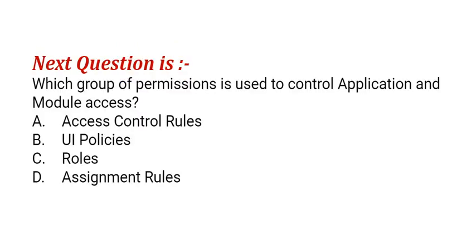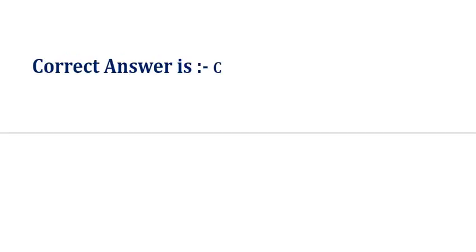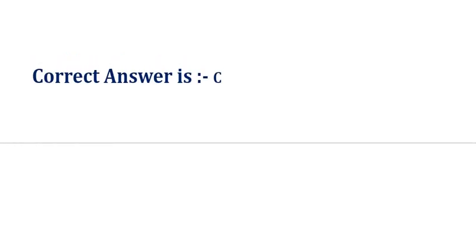Our next question is: which group of permissions is used to control applications and module access? The options are: option A, access control rules; option B, UI policies; option C, roles; option D, assignment rules. The correct answer is option C. If you find this content helpful, please like, comment and subscribe.